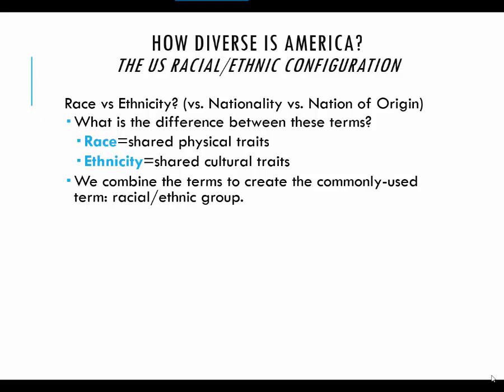Nationality is sometimes used as a synonym for race, ethnicity, or nation of origin, but it's not a good synonym for any of those things. Nationality is where you are from — which for most of you, if you are born here in America, that answer should be American. Unless someone is specifically asking about your citizenship status, they probably mean to ask about nation of origin or race. So we combine the terms race and ethnicity to create the commonly used term racial-ethnic group, which roughly means a group of people that we think kind of look alike and have some shared cultural elements in common.